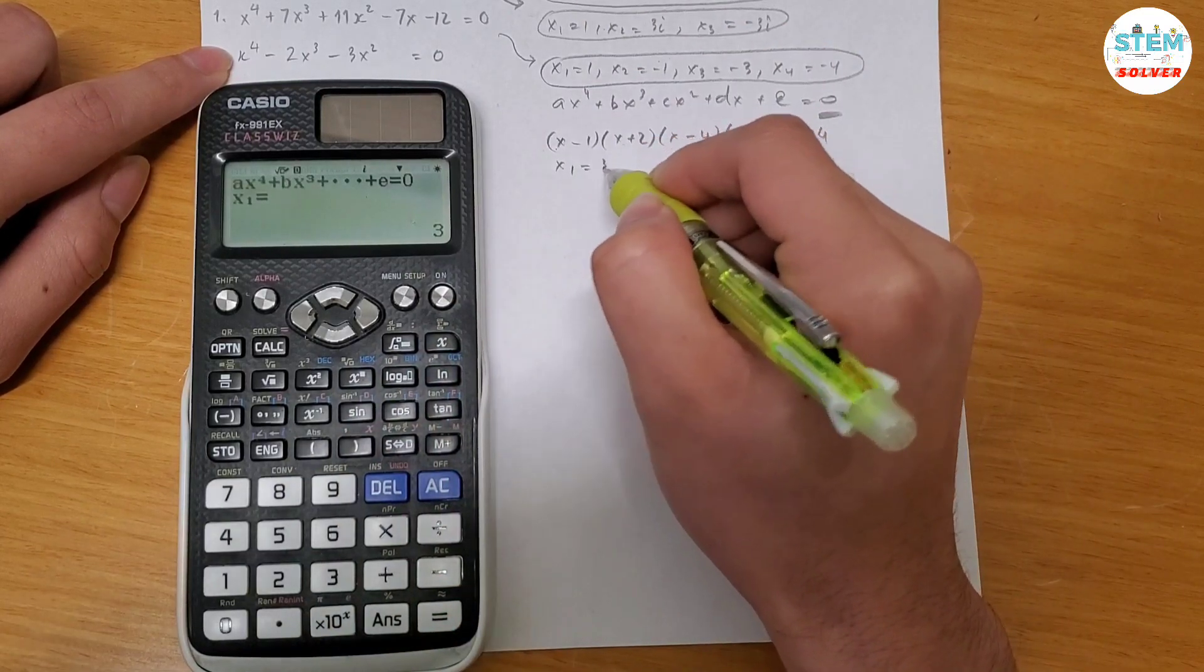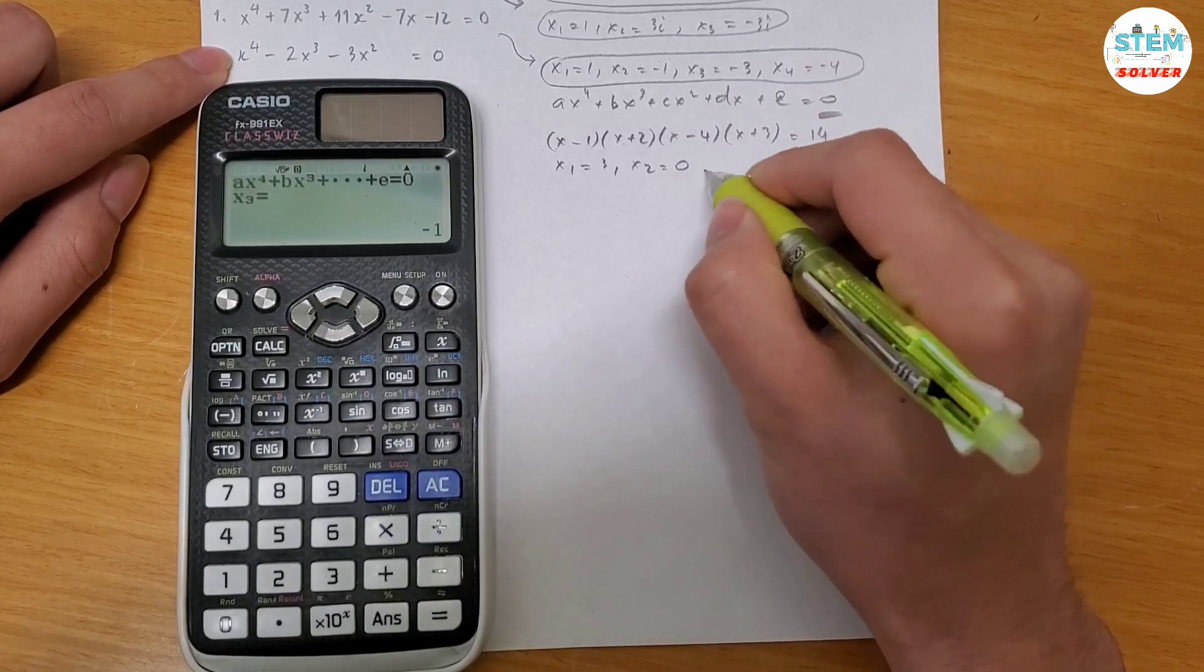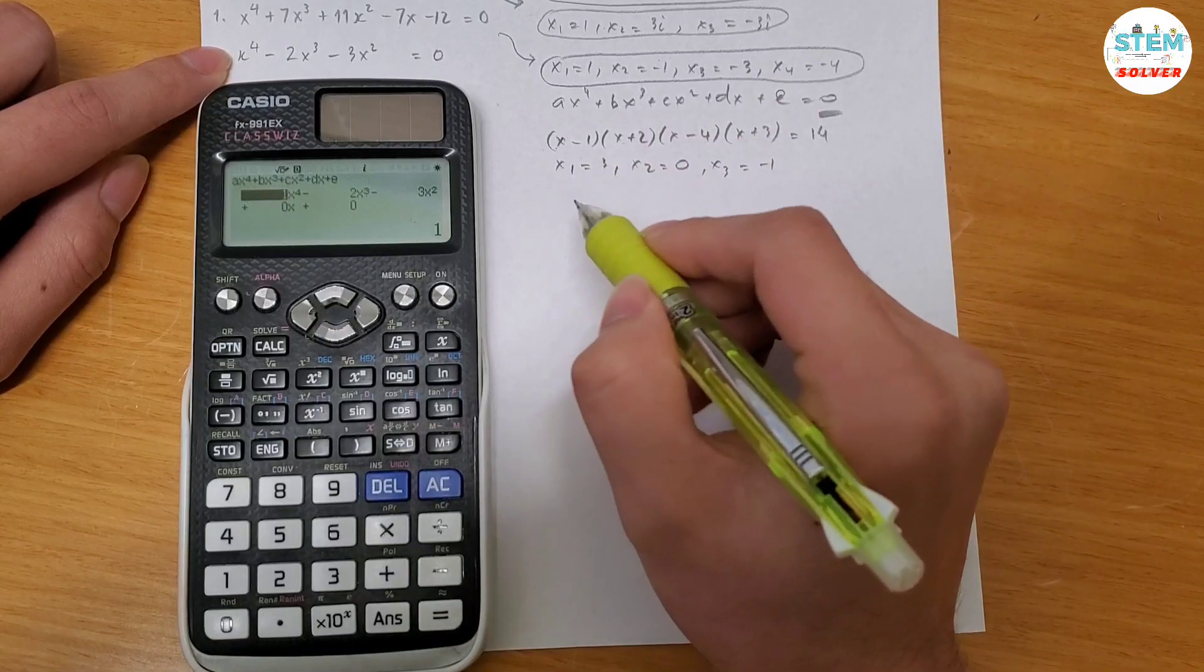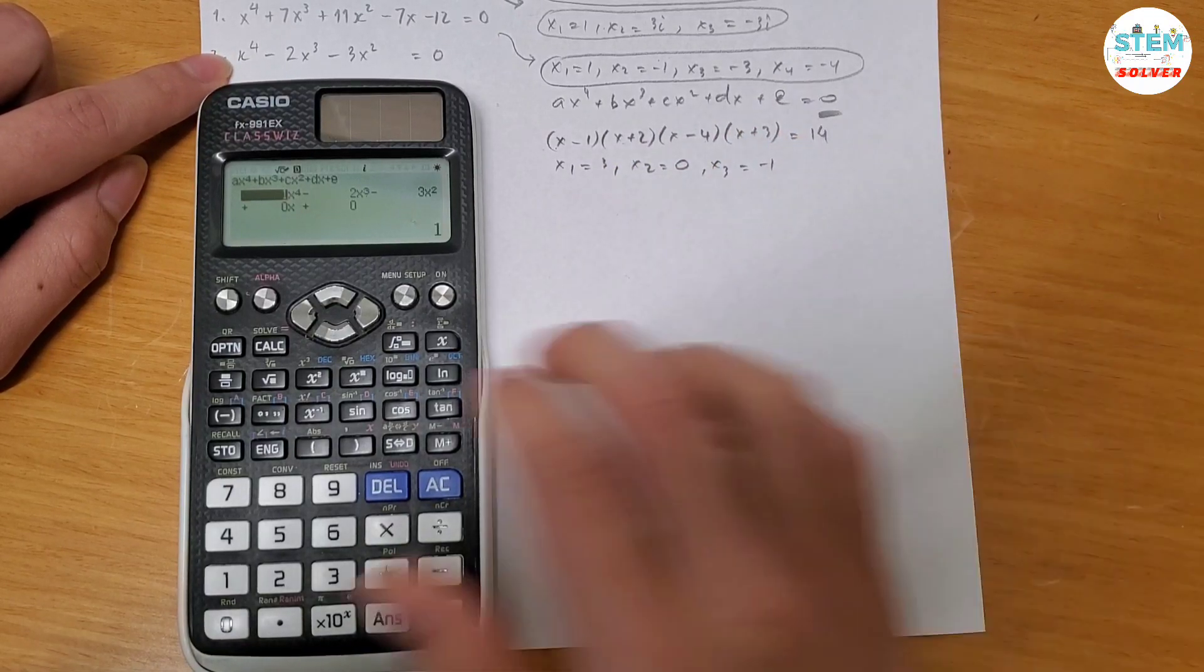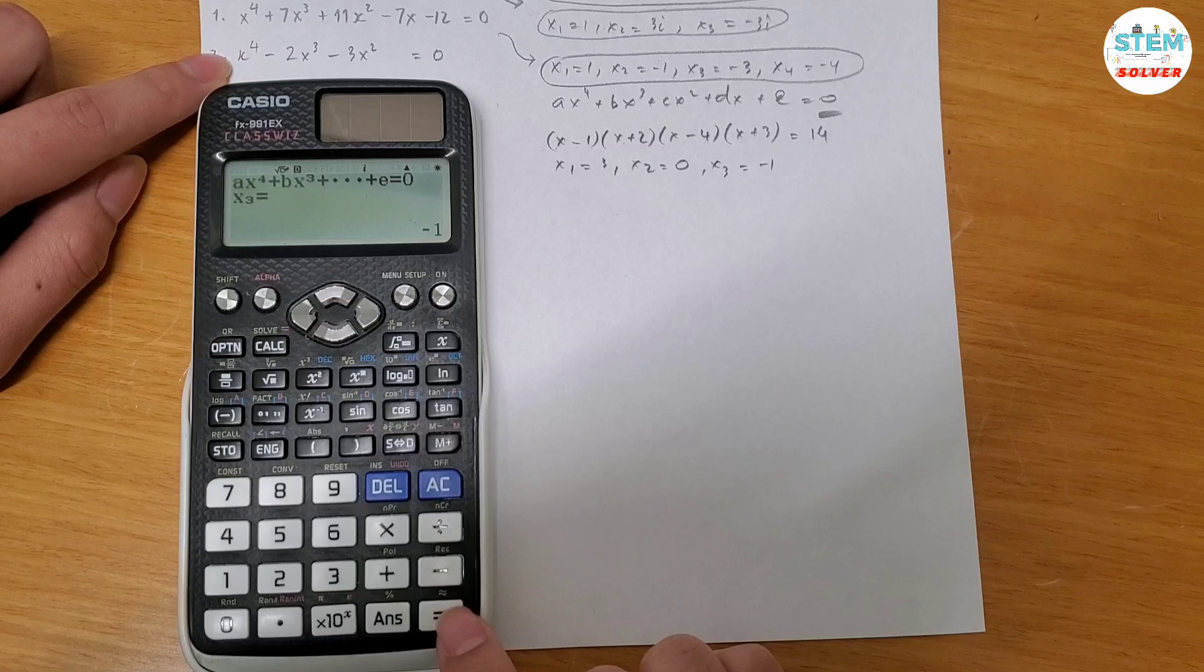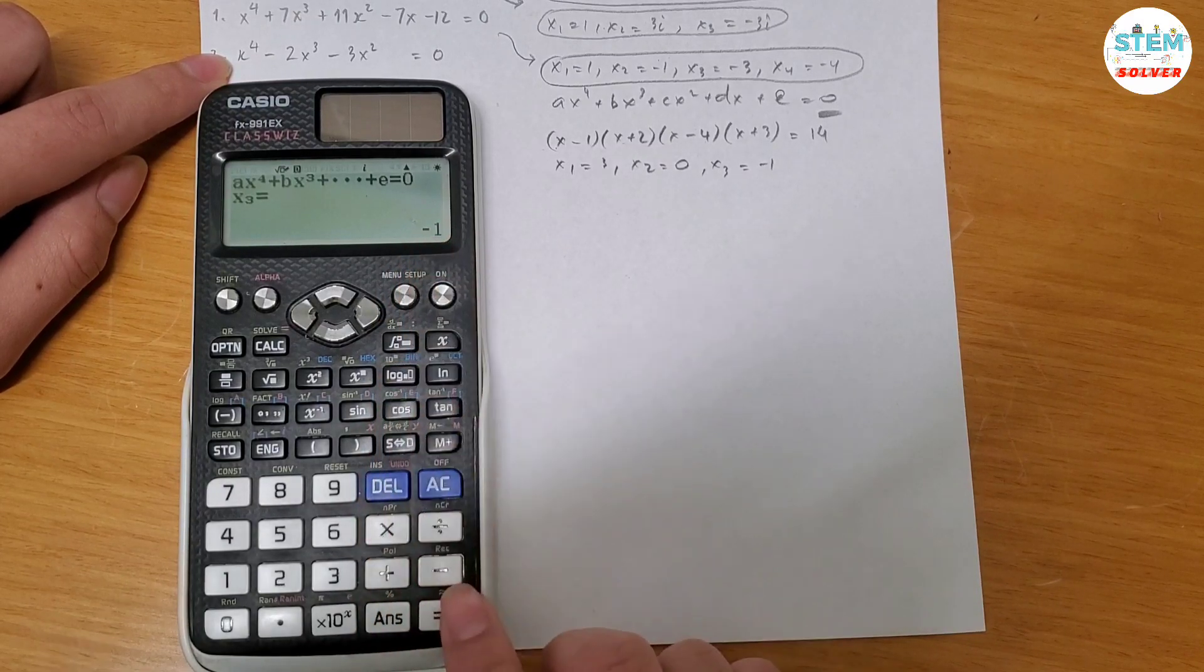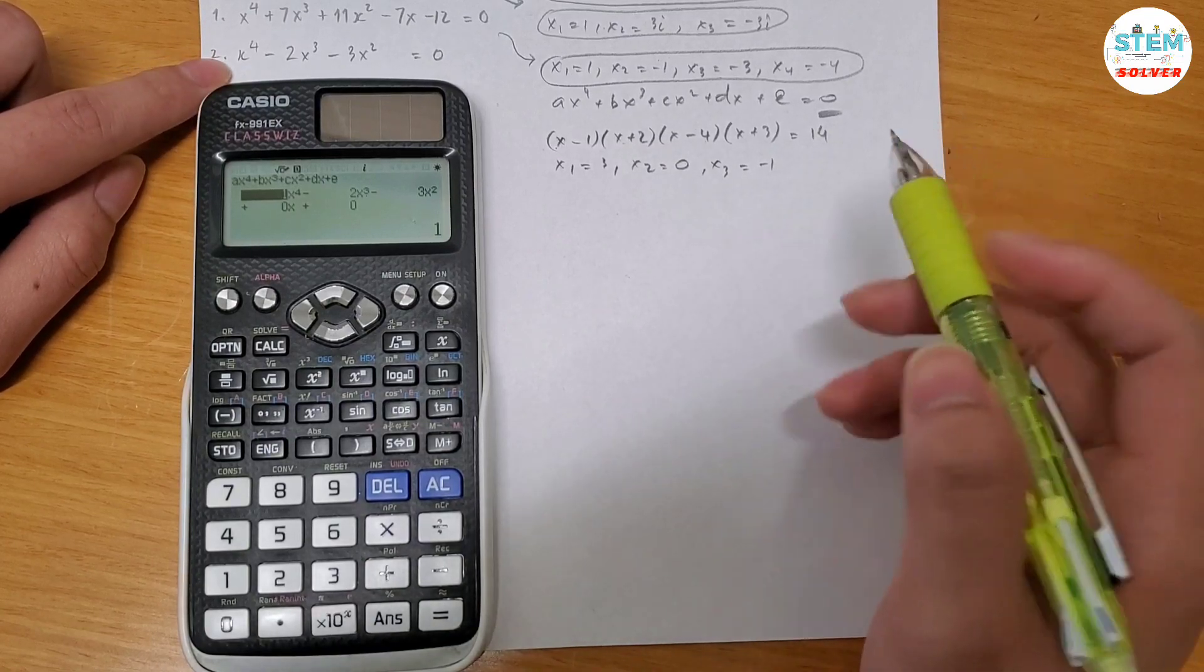So you get x1 equals 3, x2 equals 0, x3 equals negative 1.